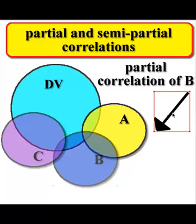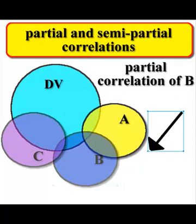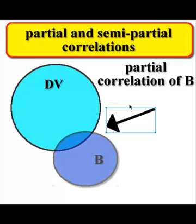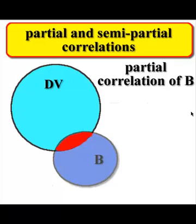So a partial correlation of B, for example, is this chunk right here. It's where B and DV overlap. Okay? And because it's a partial, it also includes any kind of overlap of the other IVs. So a partial correlation is just this picture. It's the overlap here. I hope this little red thing helps. So this red little chunk right here is the partial correlation of B.